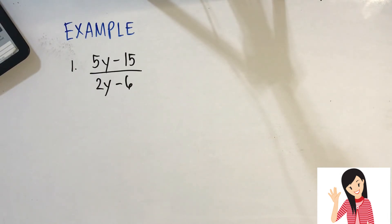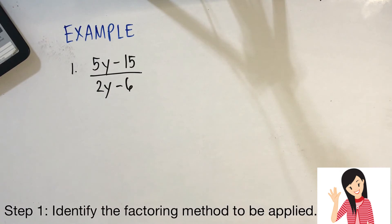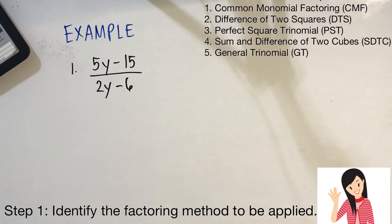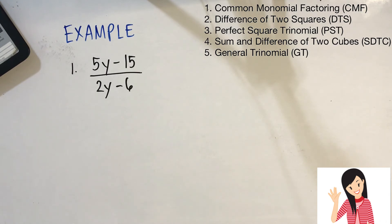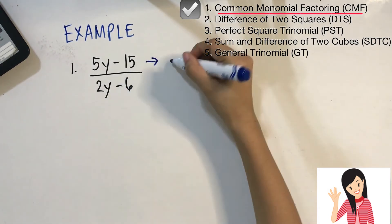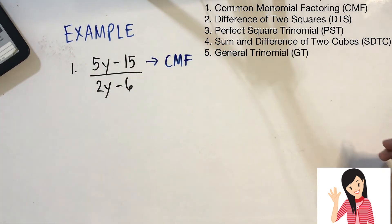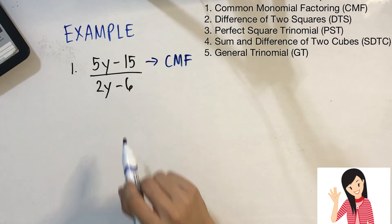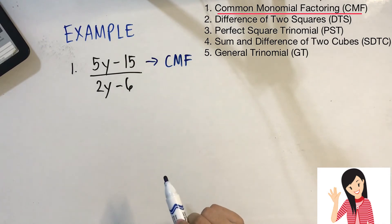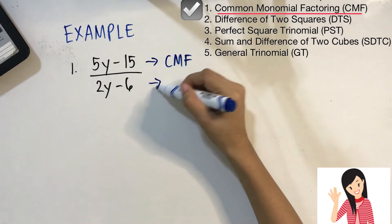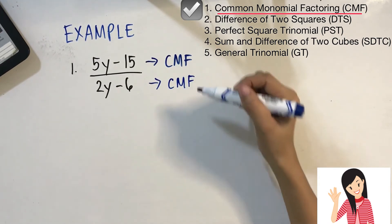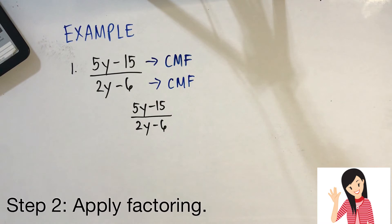Example number 1: (5y − 15) over (2y − 6). First step — identify the factoring method. For the numerator 5y − 15, can we apply common monomial factoring? Yes. For the denominator 2y − 6, can we also apply common monomial factoring? Yes. So we apply common monomial factoring to both. Now let's proceed to the second step and start factoring.